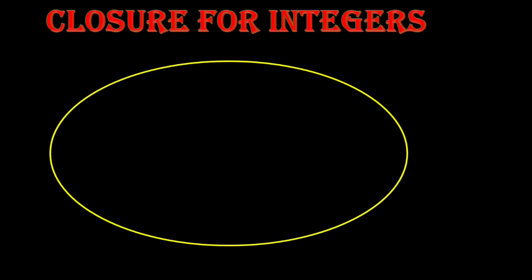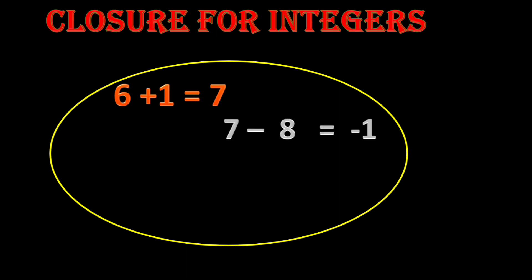Now, closure for integers. When we are doing addition for integers, we always get an integer as the sum. For subtraction — before, with whole numbers and natural numbers, we were not getting the same set of number, but here with integers, when we subtract 8 from 7, we get negative 1, and negative 1 also belongs to the integer set. So subtraction is also closed here.